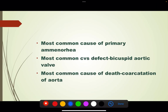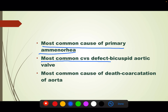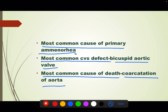The most common cause of primary amenorrhea is Turner's syndrome. Also, the most common serious defect seen in Turner's syndrome is bicuspid aortic valve. But the most common cause of death in Turner's syndrome is coarctation of aorta. So to recap: most common cause of primary amenorrhea is Turner's syndrome, most common serious defect is bicuspid aortic valve, and most common cause of death is coarctation of aorta.